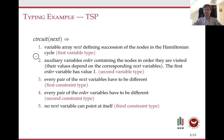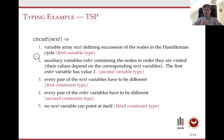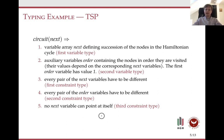The first variable type would be the 'next' type. Next variables define the succession of nodes in the Hamiltonian cycle. The second type would be the 'order' type — variables of this type correspond directly to nodes in the Hamiltonian cycle. Then we have three constraint types. The first is that the next variables must have different values. The second is that the order variables must also be different. The third is that no next variable can point to itself.